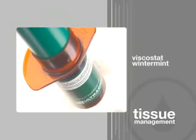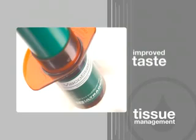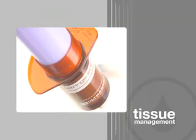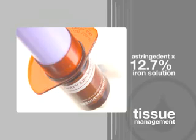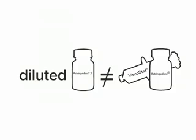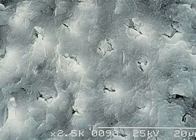Ultradent also offers Viscostat Wintermint, a mint-flavored version of the original Viscostat formula that offers an improved taste for the patient. Astringident X is a more potent formulation used when a stronger hemostatic is required or where attaining hemostasis may be more challenging. It's not as kind to tissues as Viscostat and Astringident, but is kinder than other iron subsulfate solutions. However, diluted Astringident X does not equal Viscostat or Astringident.